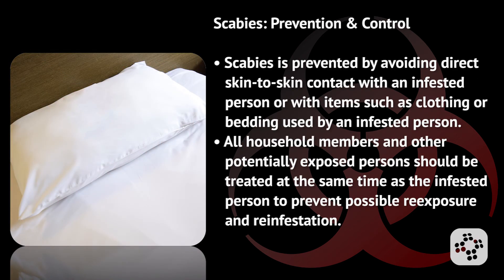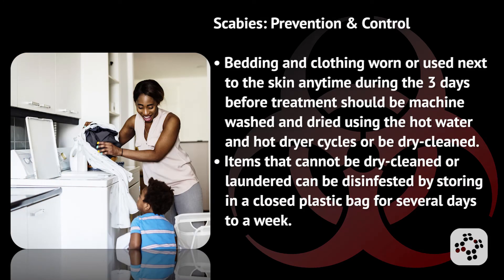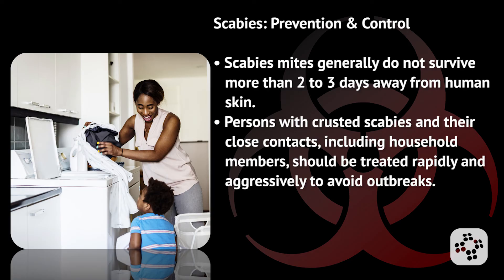Scabies is prevented by avoiding direct skin-to-skin contact with an infested person or with items such as clothing or bedding used by an infested person. All household members and other potentially exposed persons should be treated at the same time as the infested person to prevent possible re-exposure and reinfestation. Bedding and clothing worn next to the skin any time during the three days before treatment should be machine-washed and dried using hot water and hot dryer cycles, or be dry-cleaned. Items that cannot be dry-cleaned or laundered can be disinfected by storing in a closed plastic bag for several days to a week, as scabies mites generally do not survive more than two to three days away from human skin. Persons with crusted scabies and their close contacts and household members should be treated rapidly and aggressively to avoid outbreaks.